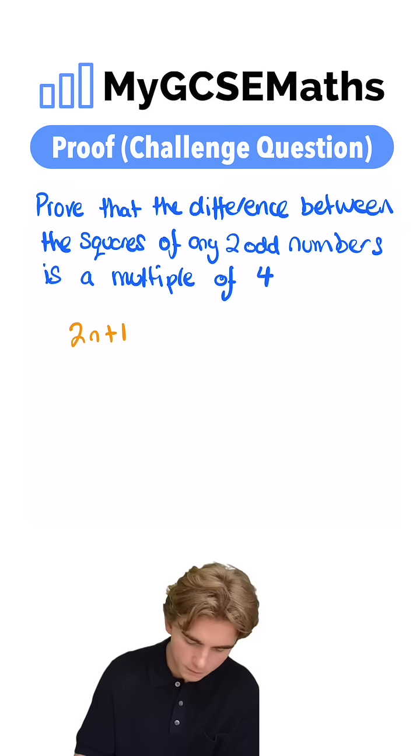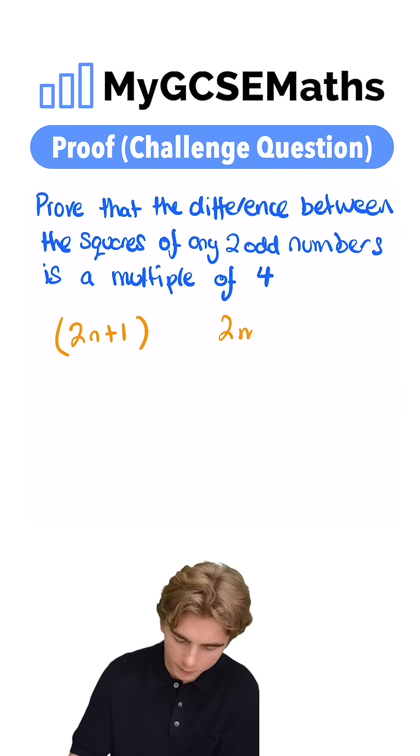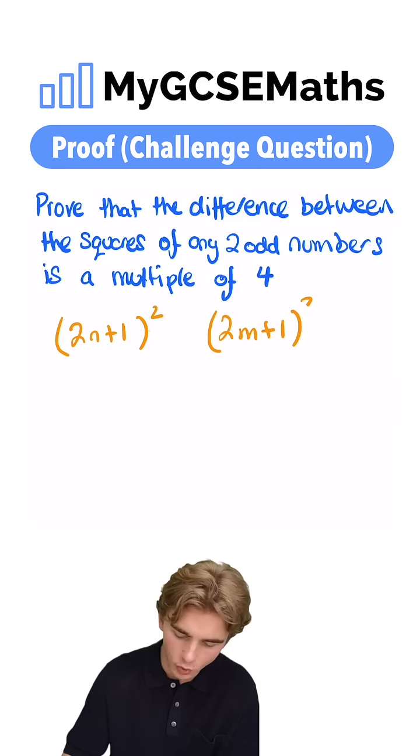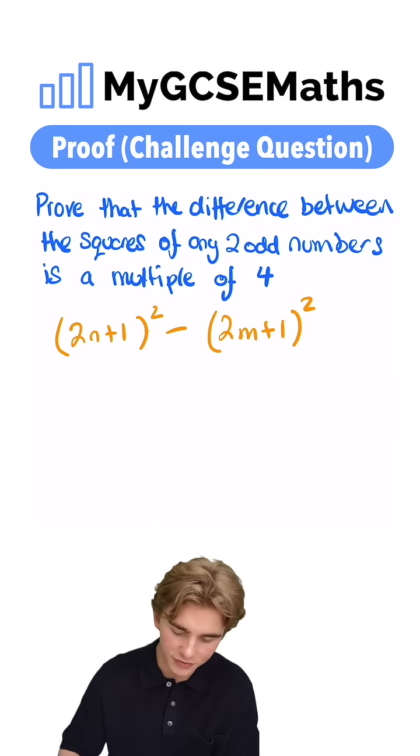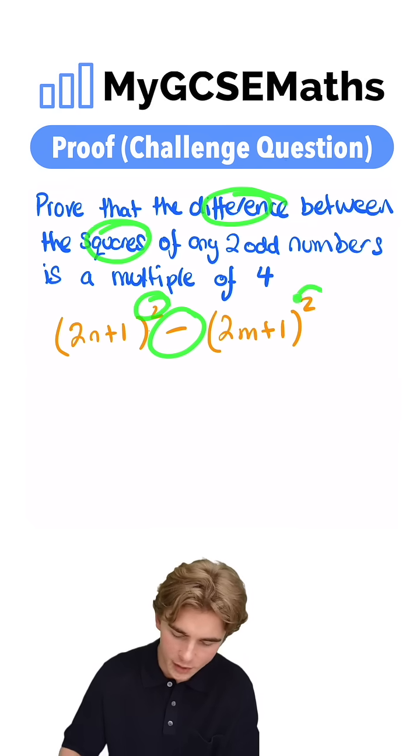We have 2n plus 1, and we have 2m plus 1. And then we're going to square them both and take one away from the other. That's because we're working out the difference of the squares of these numbers.